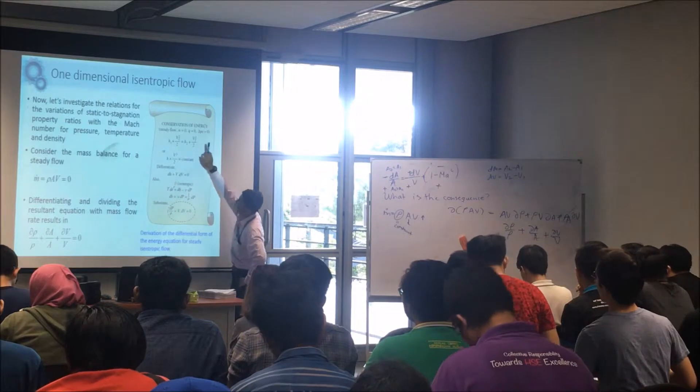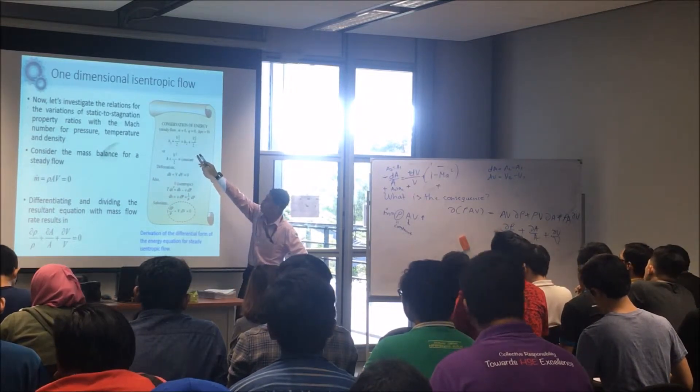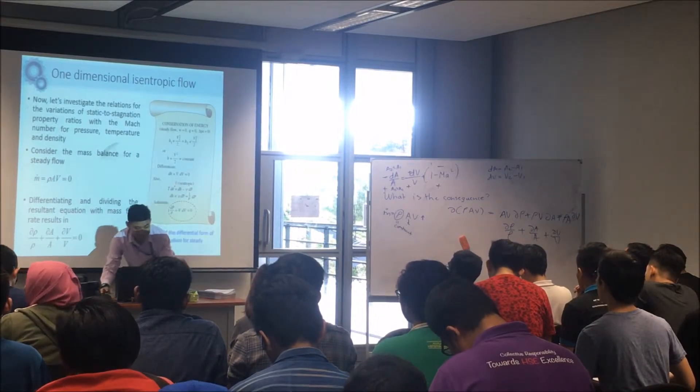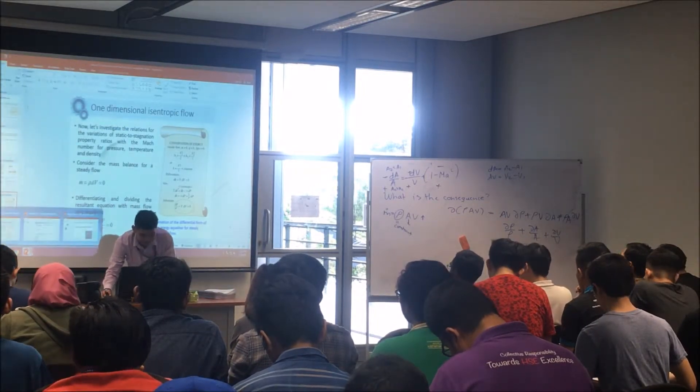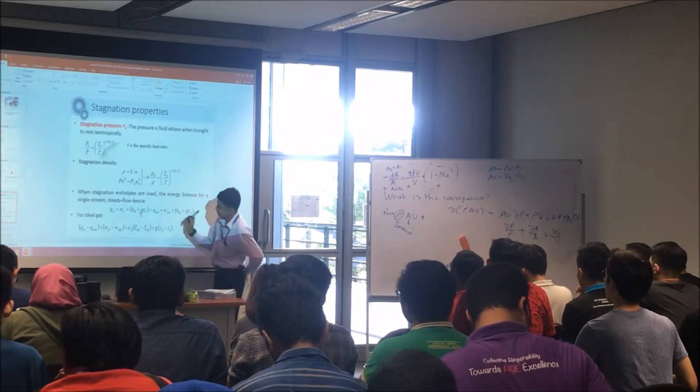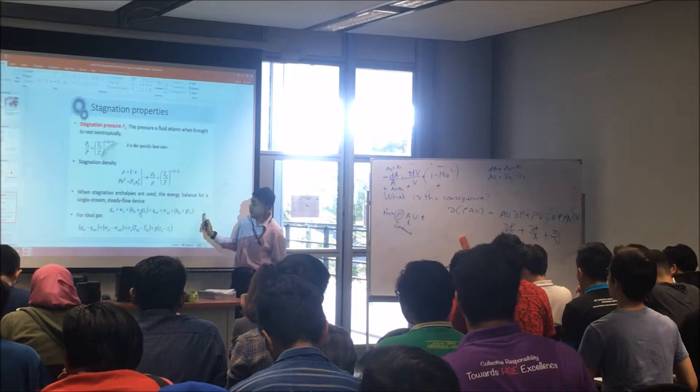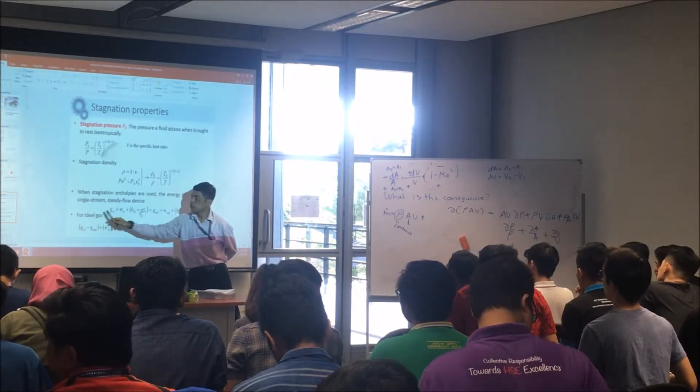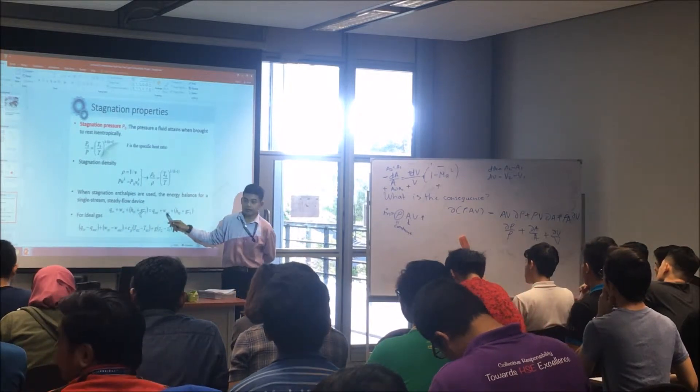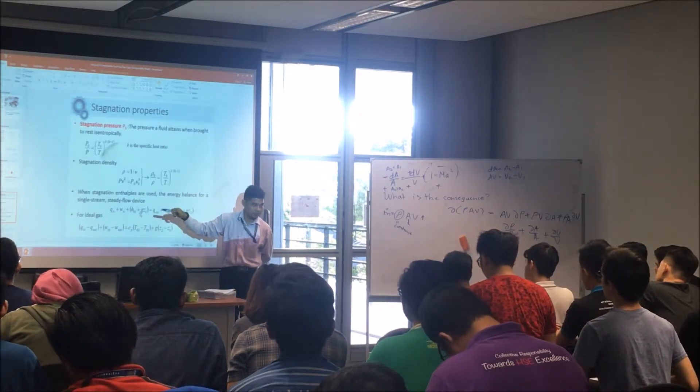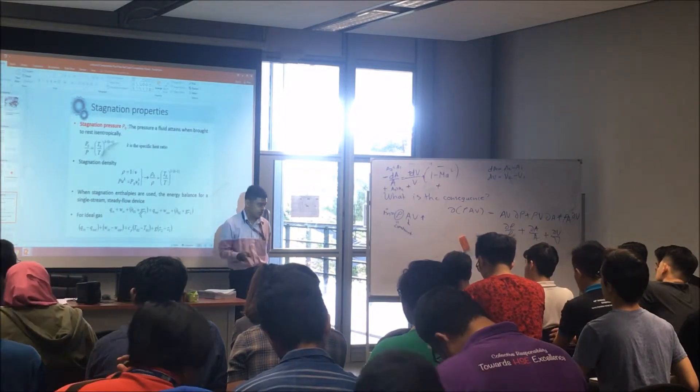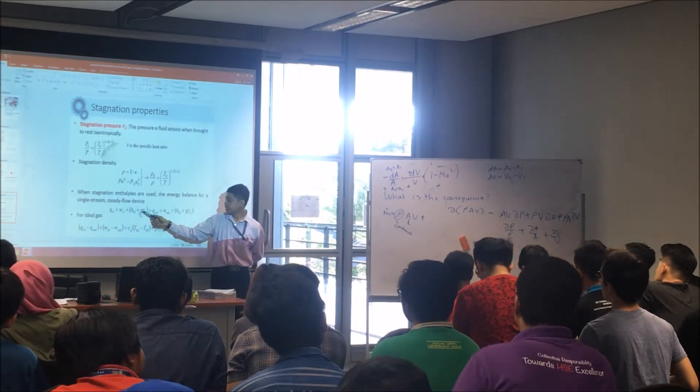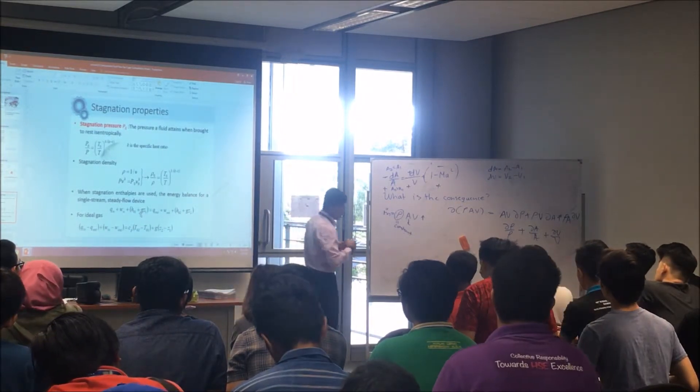Now we move to the conservation of energy. You know where does this come from? You remember last week we are talking about conservation of energy: Q in, Q out - there is no heat transfer this one's gone. W in, W out - there is no shaft work coming in or coming out of that nozzle, and it is adiabatic so this thing's gone.